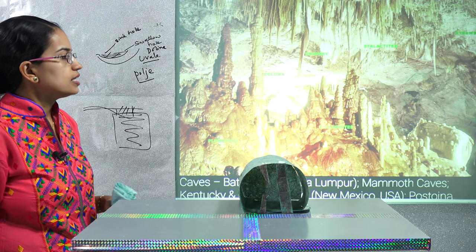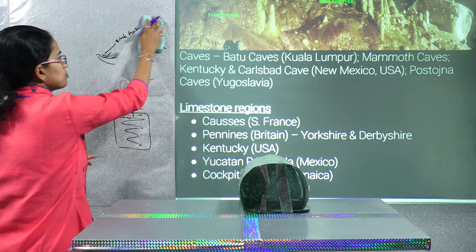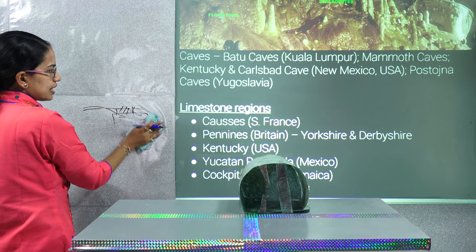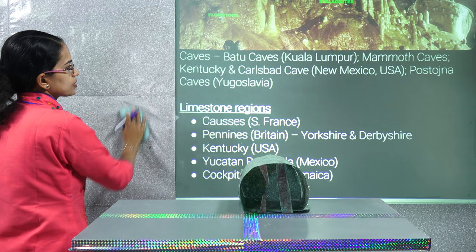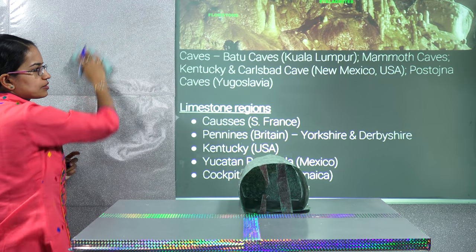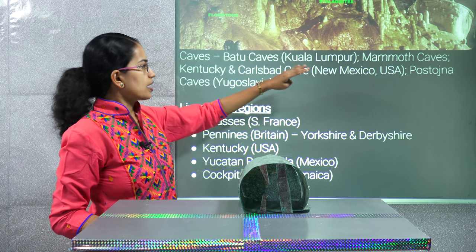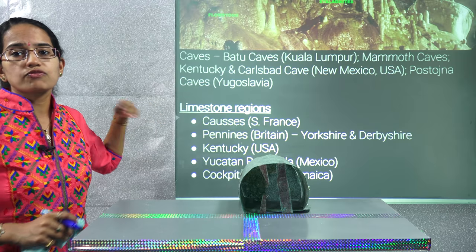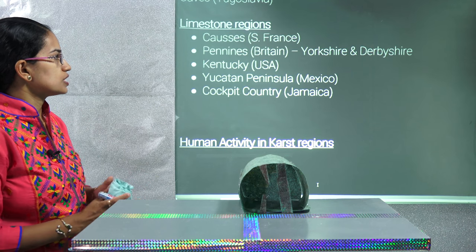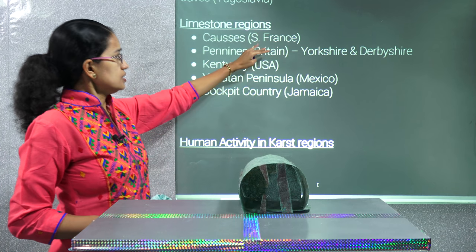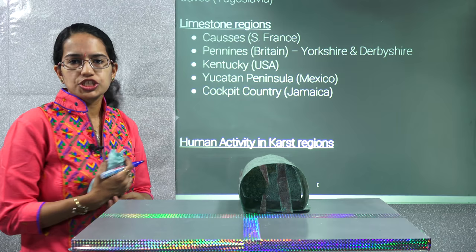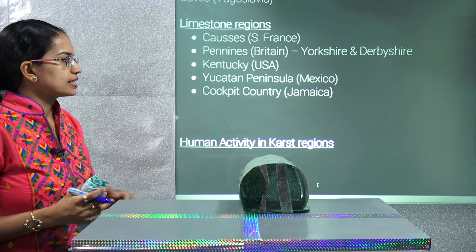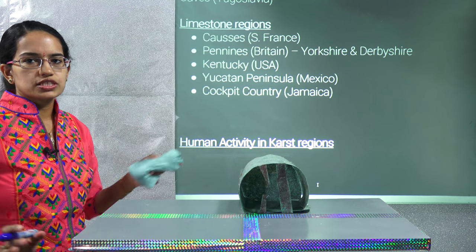Karst topography has numerous caves. Famous examples include: Batu Caves in Kuala Lumpur, Malaysia; Mammoth Caves in Kentucky, America; Carlsbad Caverns in New Mexico, America; and Postojna Caves in Yugoslavia. Famous limestone regions include southern France, the Caucasus, Yorkshire and Derbyshire in Britain, Kentucky in America, the Yucatán Peninsula in Mexico, and Cockpit Country in Jamaica.